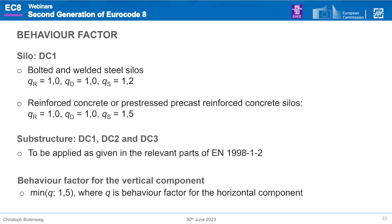Behavior factors are limited because we handle thin-wall structures likely to buckle. The maximum value is q=1.2 in DC1 for welded and bolted steel silos, and q=1.5 for concrete and pre-stressed precast reinforced concrete silos. For the substructure, higher ductility classes are allowed. An important aspect not previously incorporated is the vertical component: a minimum q-factor of 1.5 must be applied in the horizontal direction for the vertical component, which is quite important from experience.